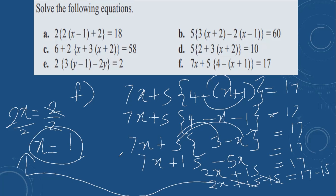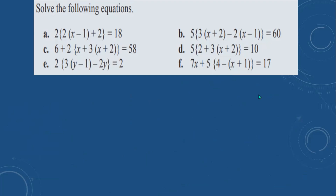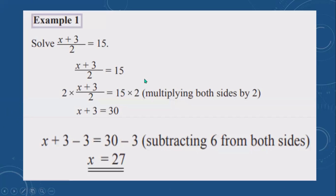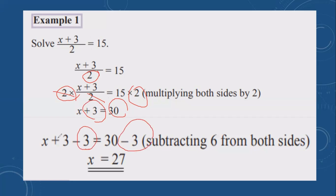That's how we use parentheses and curly brackets to solve equations. Now, solving linear equations containing fractions. Here: (x plus 3) divided by 2 equals 15. First, the opposite of division is multiplication. Multiply both sides by 2. The 2s cancel. 15 times 2 is 30. So x plus 3 equals 30. Remove plus 3 by doing minus 3 on both sides. x equals 30 minus 3, which is 27.